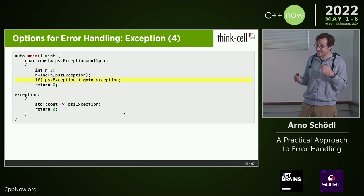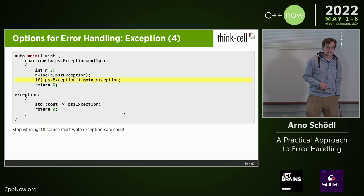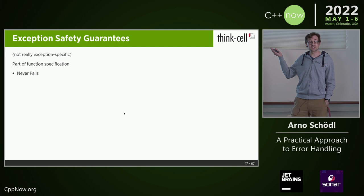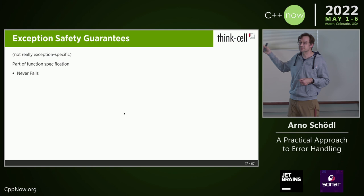Now of course you'd say: stop whining, we have to write exception-safe code. But first of all, what is exception-safe code? There are exception safety guarantees, already mentioned in the keynote. The best one is that the function doesn't fail — it never fails. That's nice but not always possible. The next one is the strong exception guarantee: when the function fails, it either restores the state to what it was before it was called, or it succeeds. That's really nice and desirable in library code, and it's doable there.